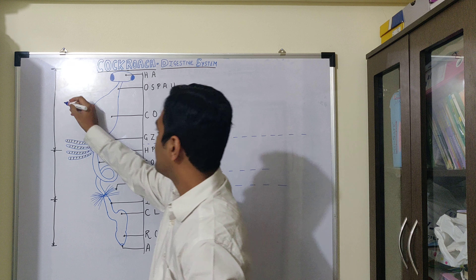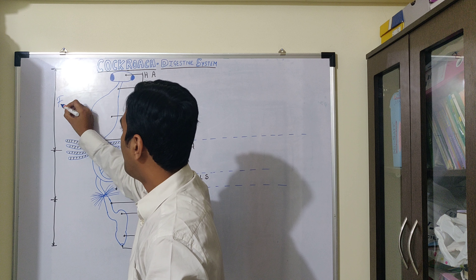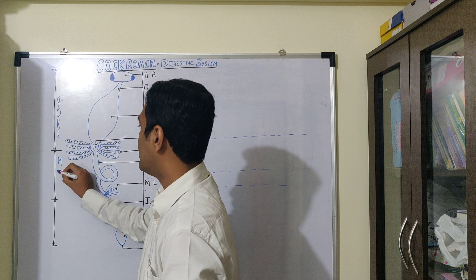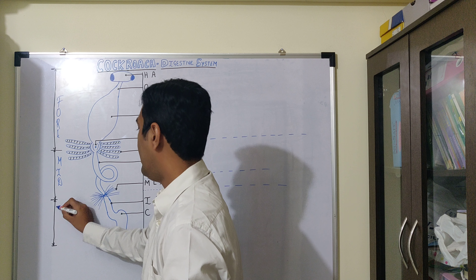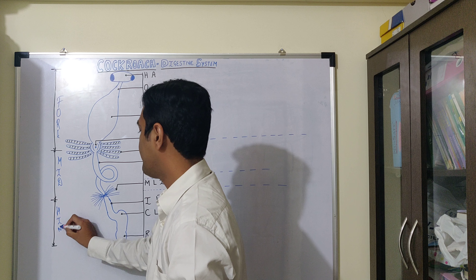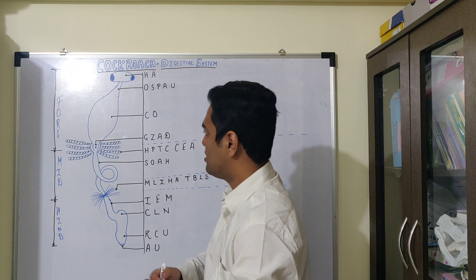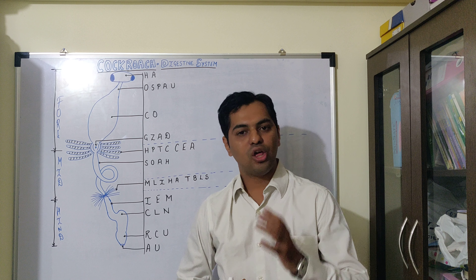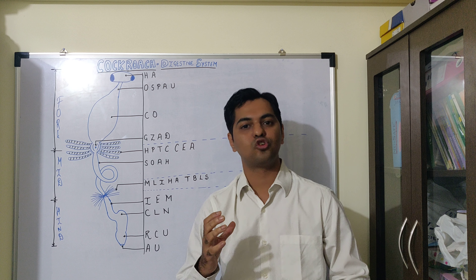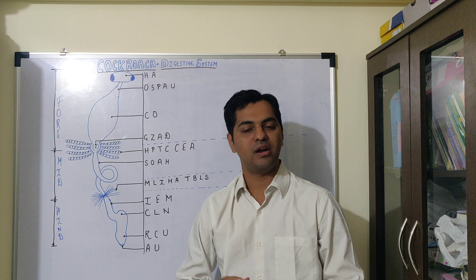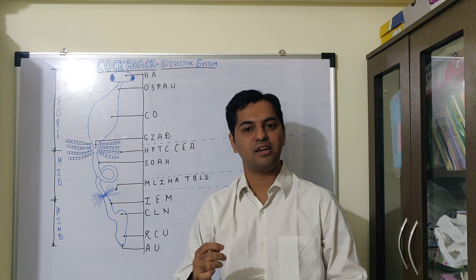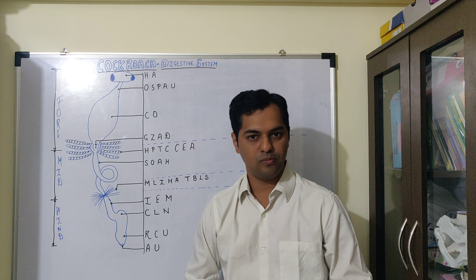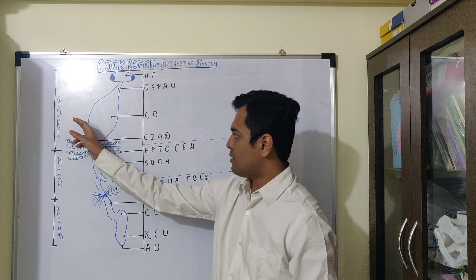The three segments are the foregut, the midgut, and the hindgut. The foregut is also known as stomodium, the midgut is known as mesenteron, and the hindgut is known as proctodium.